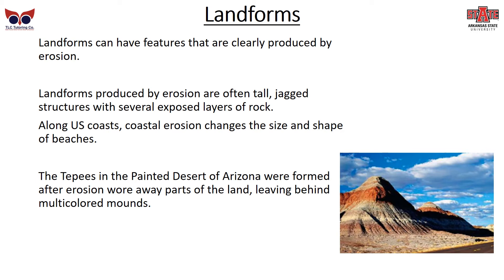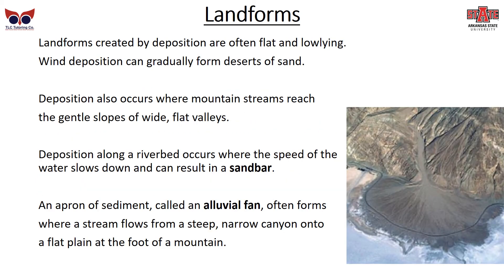Landforms that form because of erosion and deposition can be very interesting. Erosion landforms are often tall, jagged structures with several exposed layers of rock. Along the U.S. coast, coastal erosion changes the size and shape of beaches. The teepees of the Painted Desert in Arizona were formed after erosion wore away parts of the land, leaving behind multicolored mounds. Landforms created by deposition are usually flat and low-lying. Wind deposition can gradually form deserts of sand. Deposition along a riverbed occurs when the speed of the water slows down, resulting in a sandbar. An apron of sediment called an alluvial fan often forms when a stream flows from a steep, narrow canyon into a flat plain at the foot of a mountain.